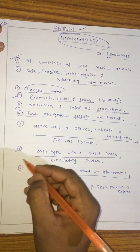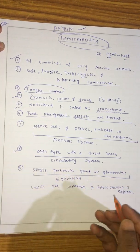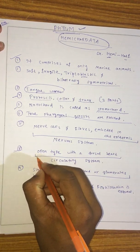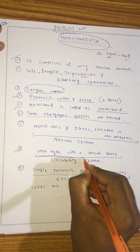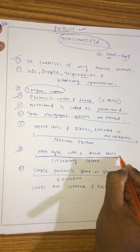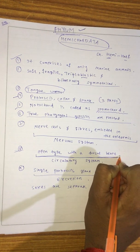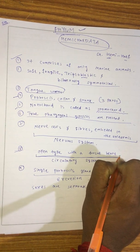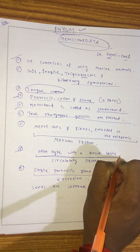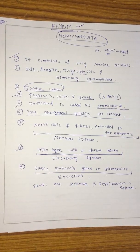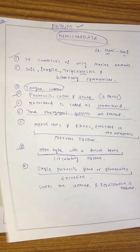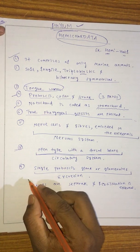The circulatory system is open type with a dorsal heart. As you know, the circulatory system is of two types: open type and closed type. In the case of Hemichordata, the animals are open type with a dorsal heart.